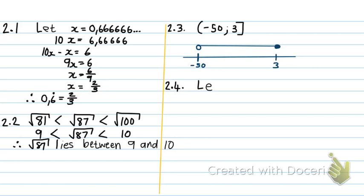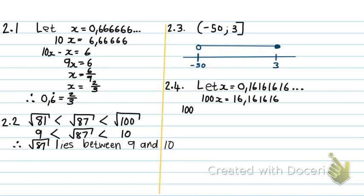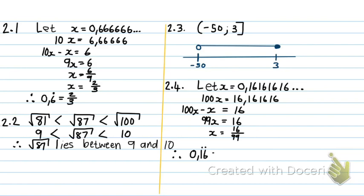Number 2.4: express 0.16 repeating as a common fraction without using a calculator. Let x equal 0.1616161616... Because there are two numbers repeating, I multiply by 100. So 100x equals 16.1616... Subtracting: 100x minus x equals 16, so 99x equals 16. Dividing by 99 gives x equals 16 over 99. So 0.16 repeating equals 16 over 99.